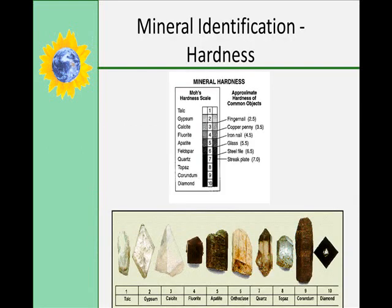Hardness is one of the main characteristics used to identify minerals. Mineral hardness is usually measured using Mohs' scale of hardness, which goes from one to ten — ten being the hardest and one being the least. Talc is the least hard mineral, and diamonds are the hardest. Common objects like fingernails can tell you the hardness: a fingernail has a hardness of 2.5, so if it can scratch the mineral, the mineral is either hardness 1 or 2. If your fingernail can't scratch it but a copper penny can, it has a hardness of 3.